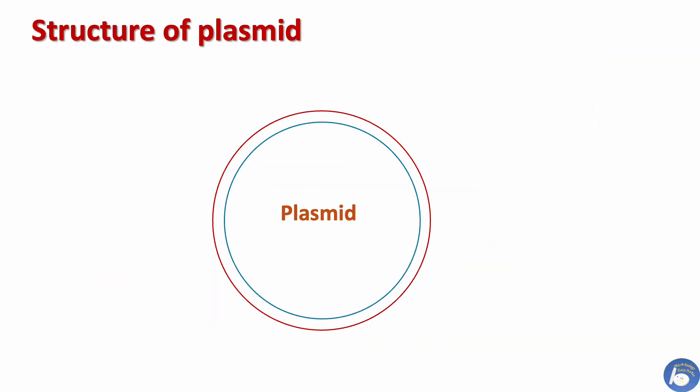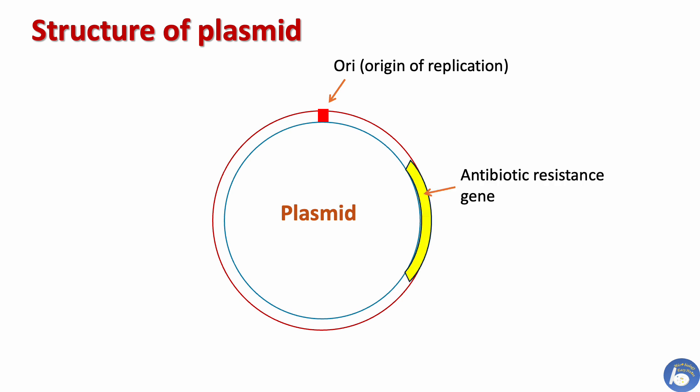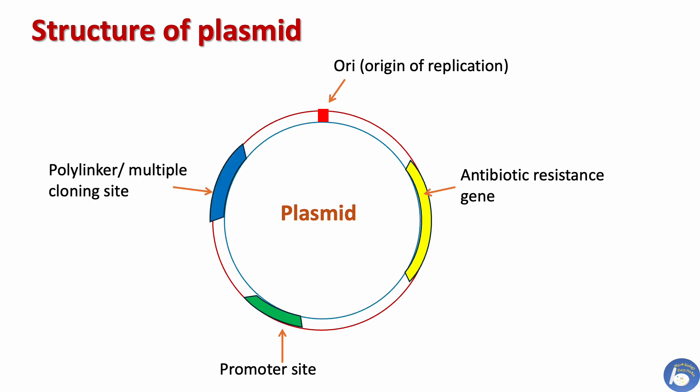Any plasmid has these important components: the first is the ori site or origin of replication site, antibiotic resistance gene site, promoter site, poly-linker or multiple cloning site, and primer binding site. Let's discuss all these components one by one.